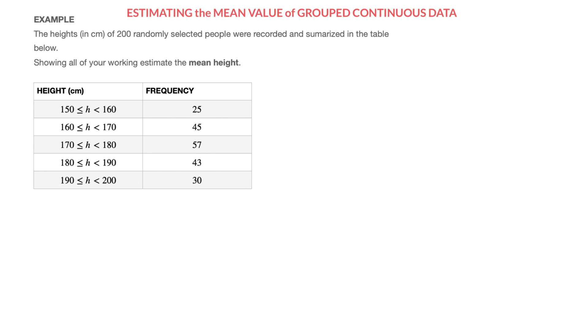The second column we have here, the frequency column, tells us that there were 25 people that fell in that class interval. And something similar could be said for each of the class intervals and their corresponding frequencies on each of the following rows.